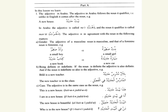First, it always agrees in gender. The adjective of a masculine noun is masculine and that of a feminine noun is feminine. For example, if we want to say 'a small boy,' we say Waladun Sagrirun. Or if we want to say 'a new book,' we say Kitabun Jadidun. In both cases, the noun is masculine and the adjective is masculine.